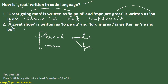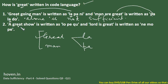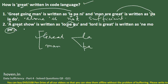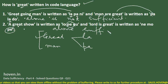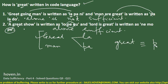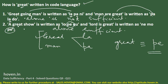Now let us take the second statement: 'A great show' is written as 'low pa q'. We have to find the code for 'great'. Comparing with the first statement, 'laud' and 'a' do not appear there, so 'great' is the only common word. 'Pa' is common to both codes, so we can unambiguously determine that 'great' is coded as 'pa'. Statement two alone is sufficient.